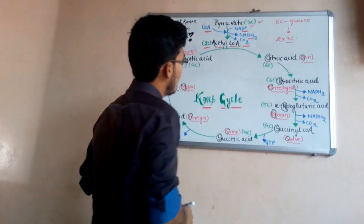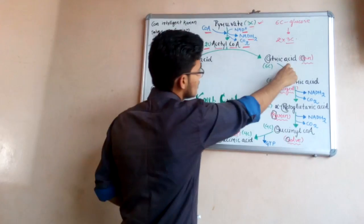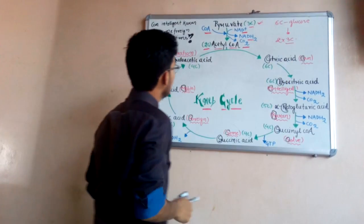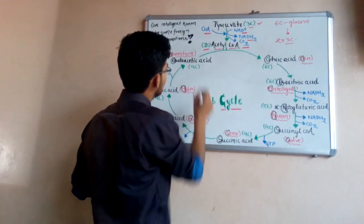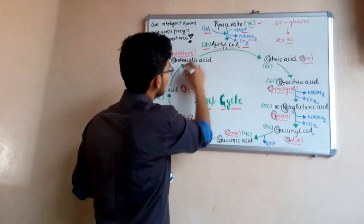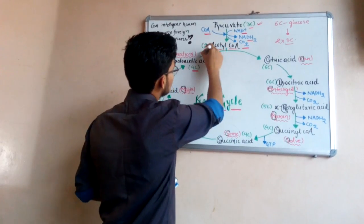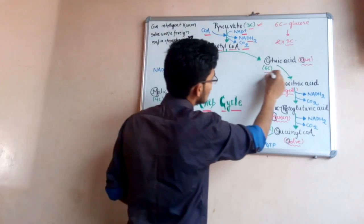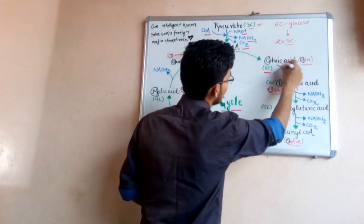This reaction forms Acetyl Coenzyme A, which is a two-carbon compound. The Krebs cycle starts with citric acid — oxaloacetic acid, which is a four-carbon compound, combines with Acetyl Coenzyme A, a two-carbon compound, giving a six-carbon compound that is citric acid.